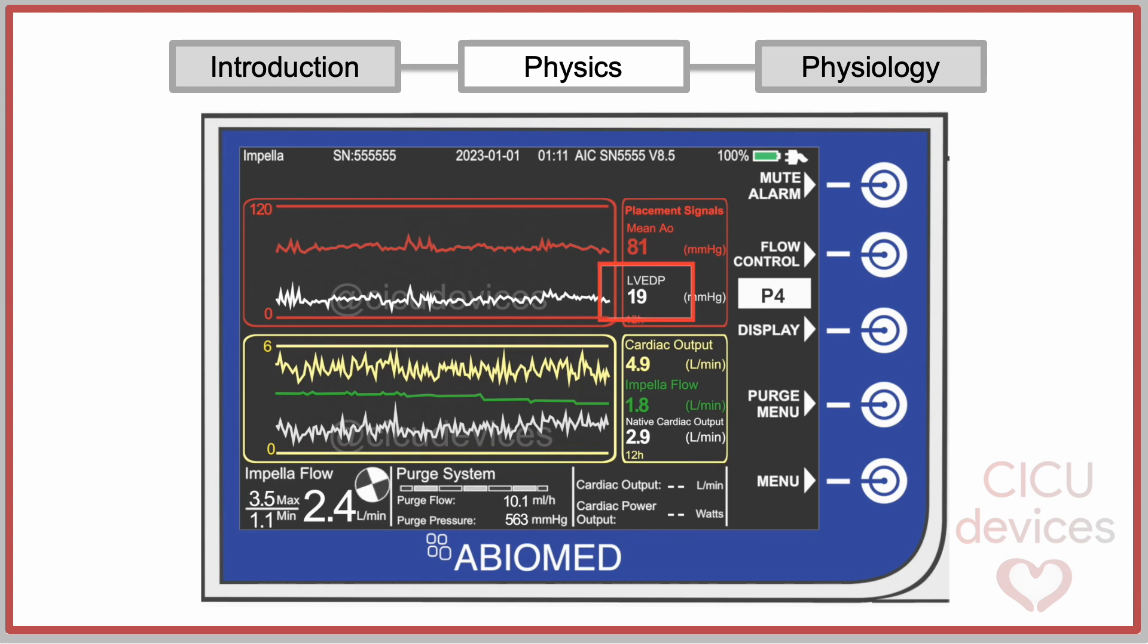In this way, the console shows the value of the left ventricular end diastolic pressure and its evolution in the preceding hours on one of the display screens.